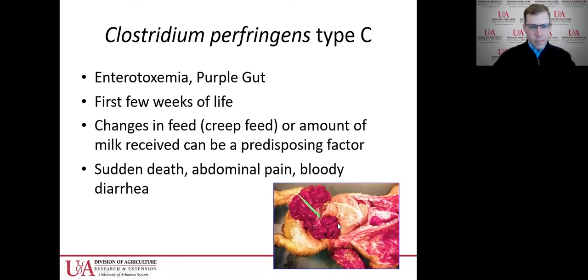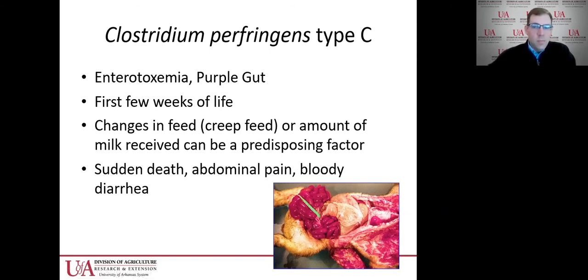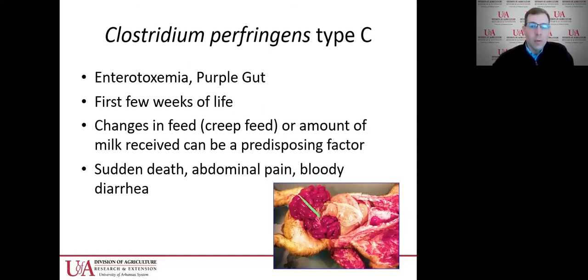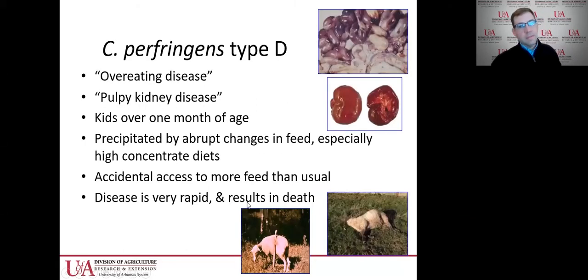You can see in the picture why we call it purple gut — the intestines are full of basically blood clot when you open them up on post-mortem exam. This can cause sudden death: an animal can look fine yesterday and be dead today. If you do see clinical symptoms before death, you might notice abdominal pain — goats especially are very vocal about their pain — and possibly diarrhea with some blood before they die, but often sudden death is the first sign.